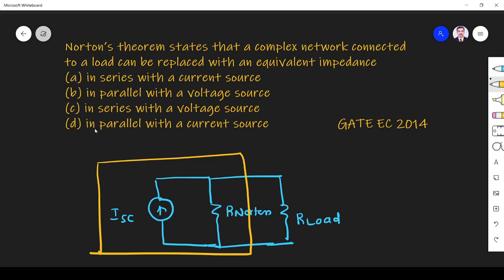d matches with that. It is equivalent impedance in parallel with the current source, right? So option d is the right answer. Thank you.